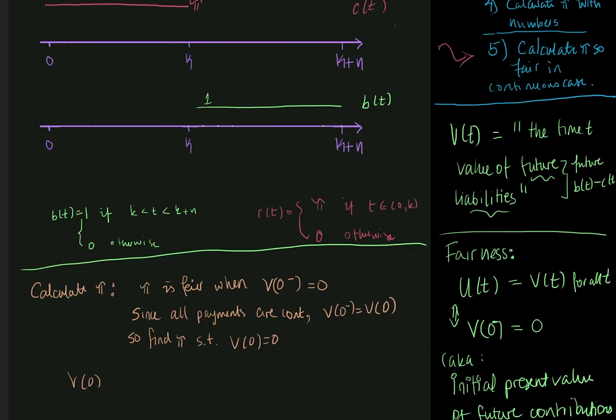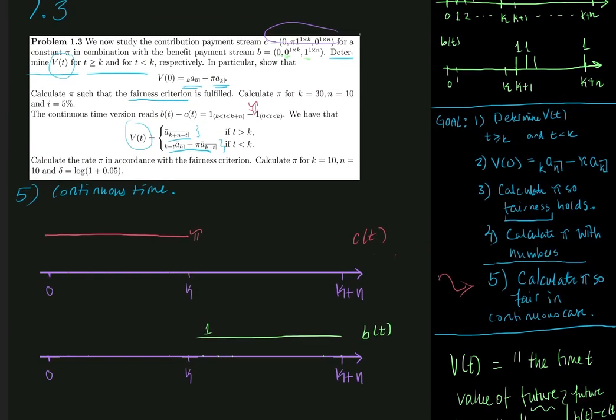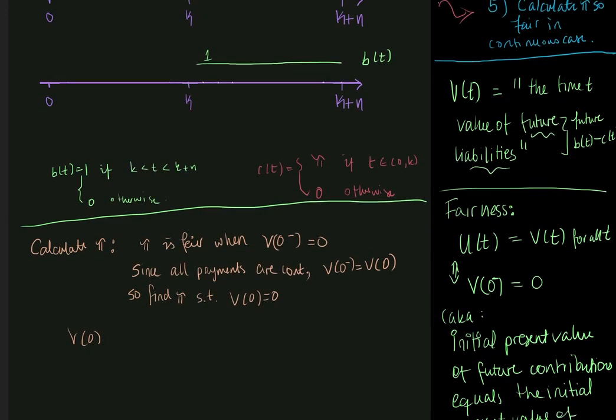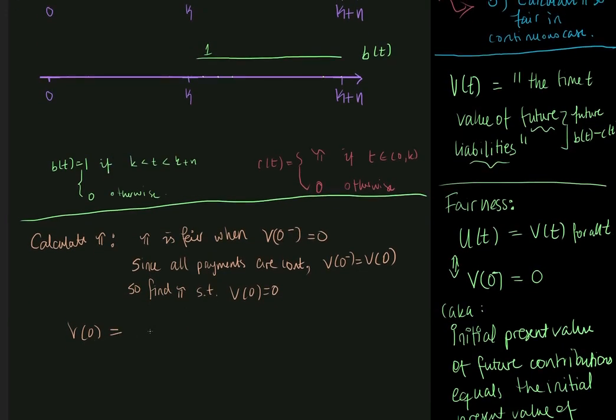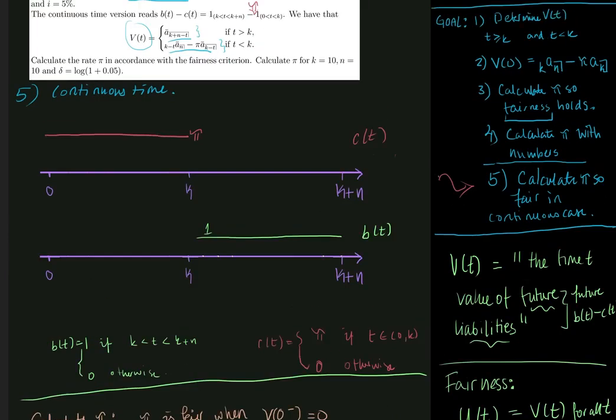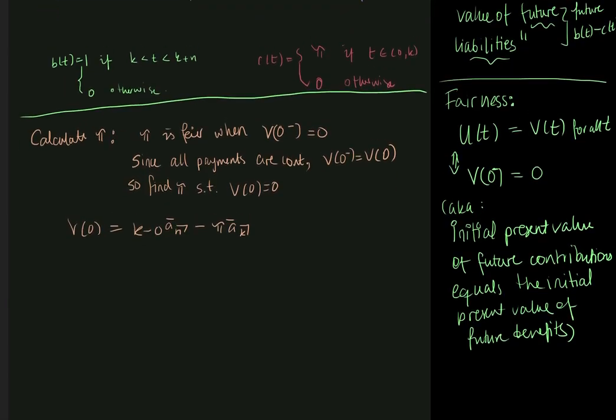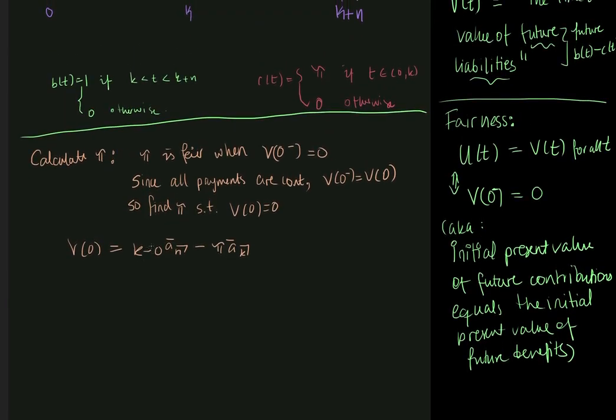So what value does v of 0 have? Well, we have been given that v of t is equal to this thing here if t is smaller than k. So let's try to write that down. It's k minus t, which is 0, a bar n minus pi, a bar k minus 0, which is just k, right? So that looks right. And I can also just remove the 0 over here.